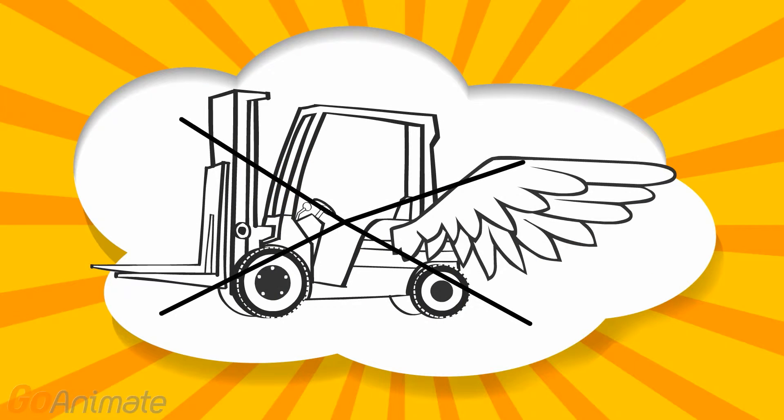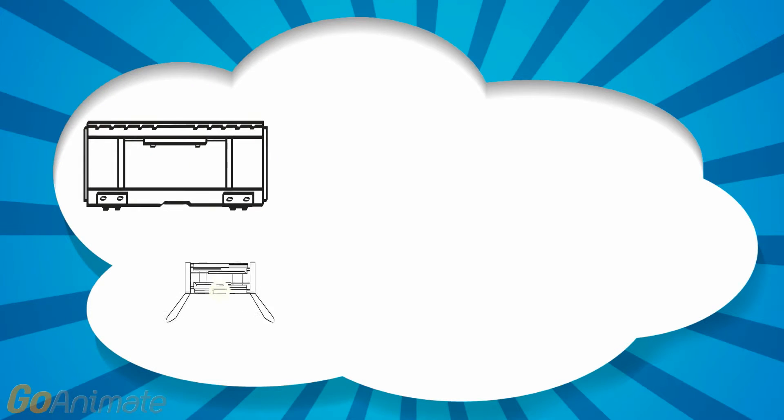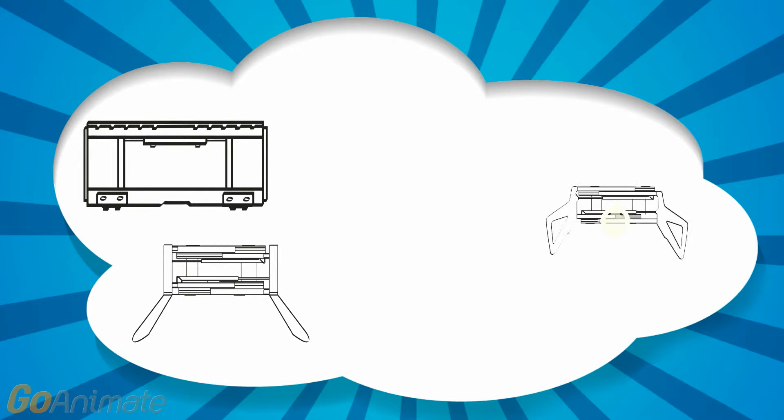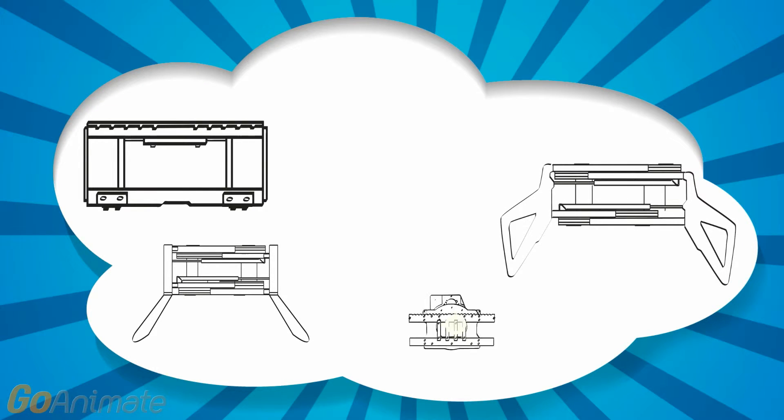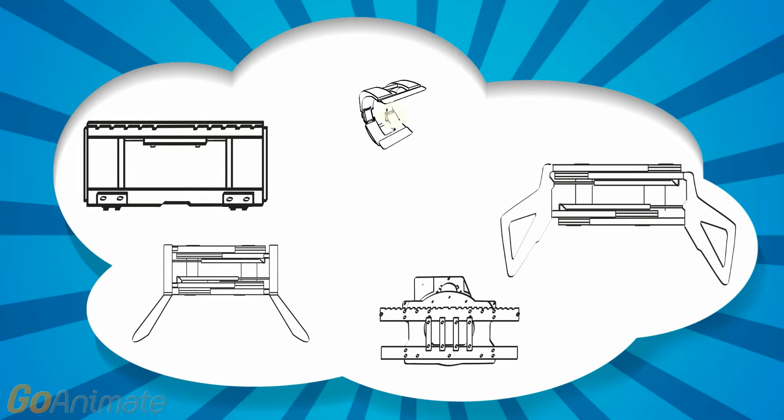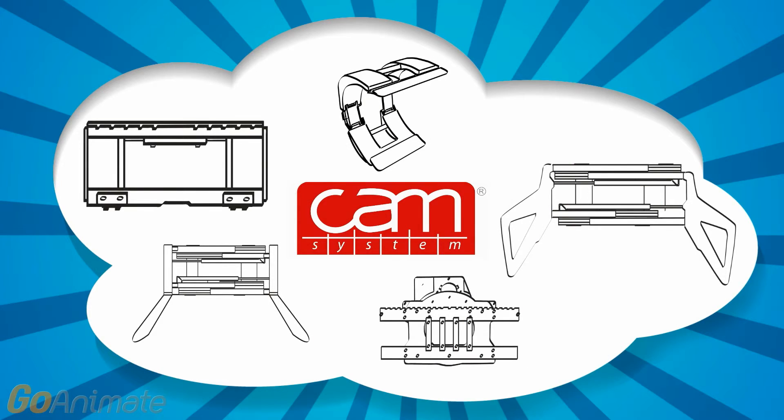While your lift truck may not have the ability to fly, adding a side shifter, fork positioners, multiple fork positioners, bail clamps, fork clamps, 180 or 360 degree rotating clamps, carton clamps, or paper roll clamps are just some of the super strengths Cam products can provide.